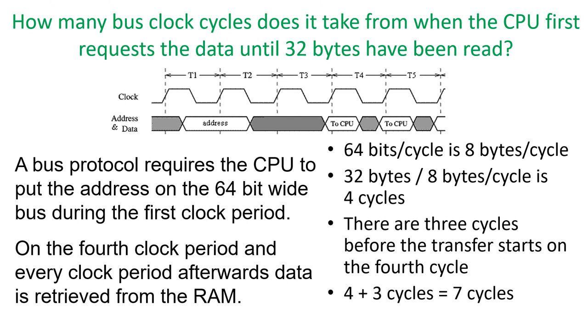The bus we're using here is 64 bits wide. Dividing 64 bits by 8 bits per byte gives 8 bytes per cycle. We want to transfer 32 bytes, so divide 32 by 8 to get 4 cycles to transfer the information. Since there was a 3 cycle delay, meaning the transfer starts on the 4th cycle, we add 3 to 4 and get 7 cycles total from when the CPU first requested the information.